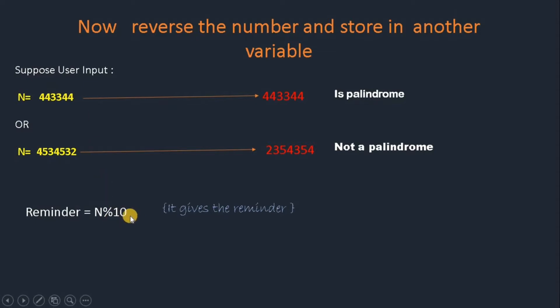Because we are dividing by 10, this value will be isolated. You can see 443344 % 10 means the 4, the last digit, will get stored. After that, we will initialize a reverse variable to be zero.